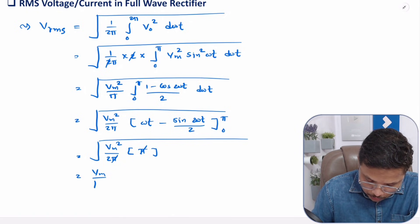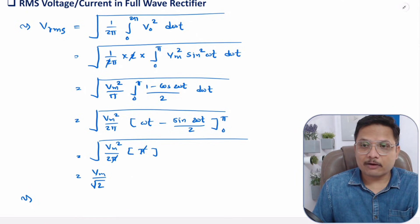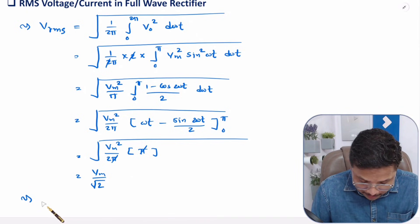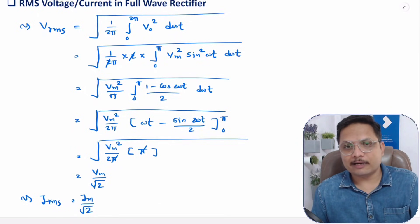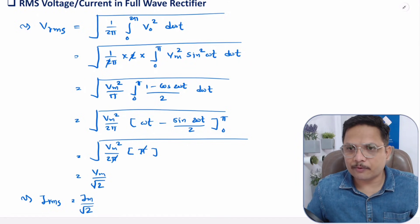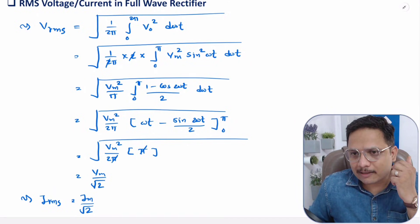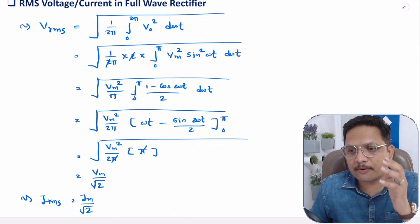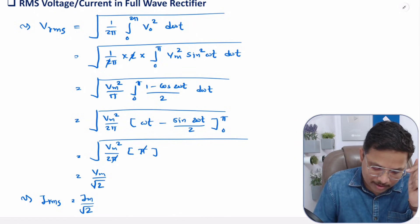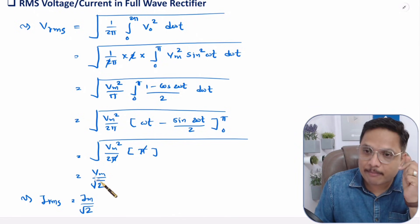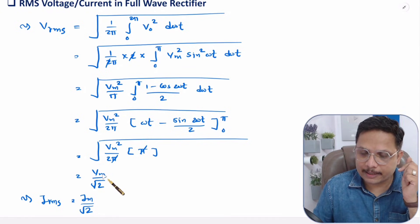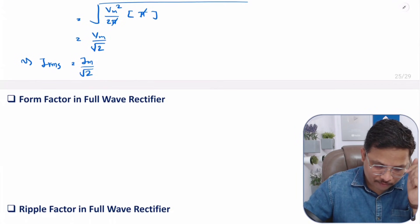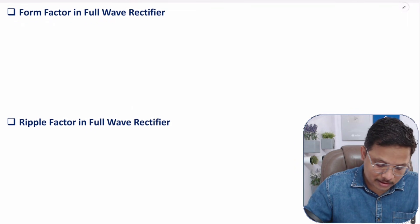For current, similarly, Irms = Im/√2. In my earlier videos on half wave rectifier, Vrms was Vm/2, whereas for full wave rectifier it is Vm/√2.